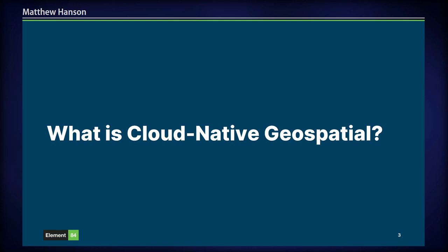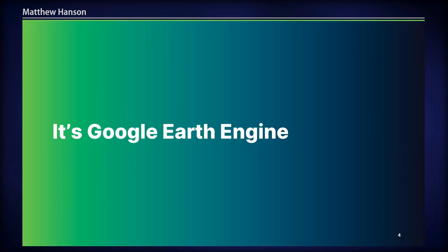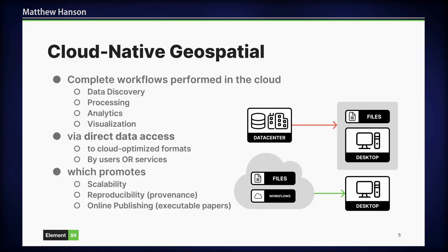So what is cloud native geospatial? I'm going to take a big picture view here. Cloud native geospatial is Google Earth Engine — it really is. It's about having complete workflows in the cloud, from data discovery through processing, analytics, and visualization — all happening through a lightweight client. The user has direct access to the data, but a lot of it is abstracted and transparent. You type a script and don't worry about individual scenes; you can create a mosaic over the entire world if you want. This is what cloud native geospatial is: you have direct access to the data, and this promotes scalability.